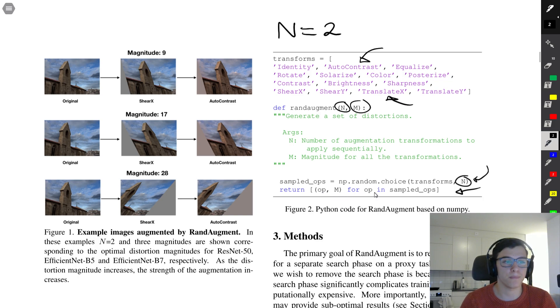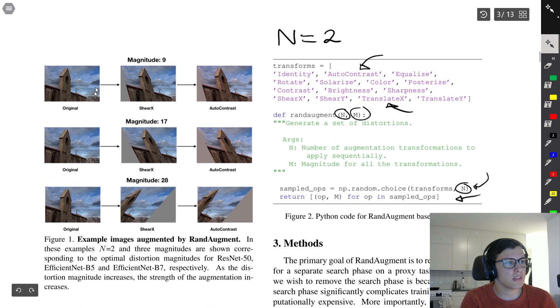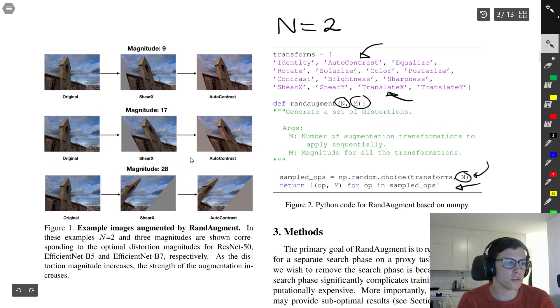We can see some examples here where they have chosen n equal to two. The first one just happened to be shear and then auto-contrast, and they demonstrate how that looks like for different magnitudes. Having a magnitude of nine means they have a smaller augmentation strength, and then a larger magnitude means larger augmentation.